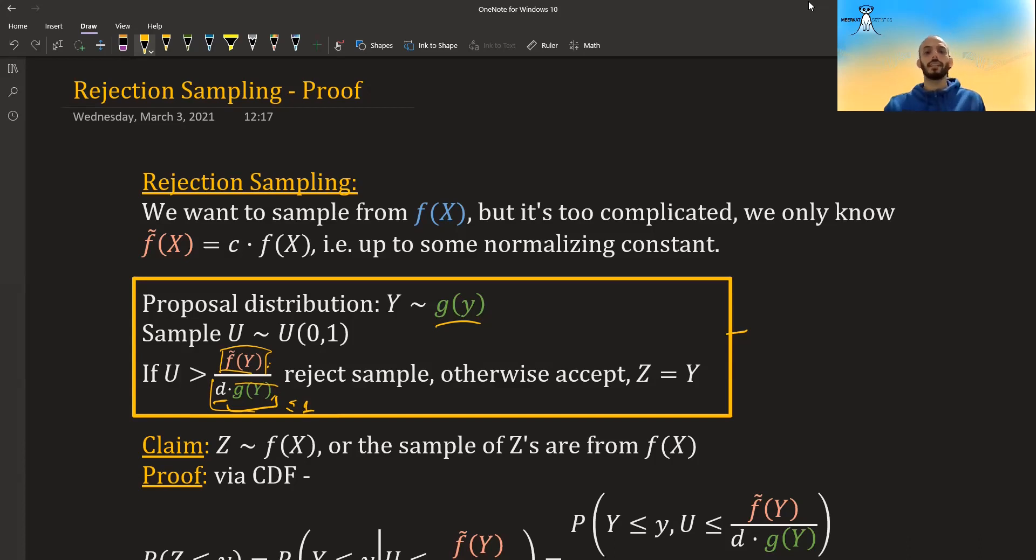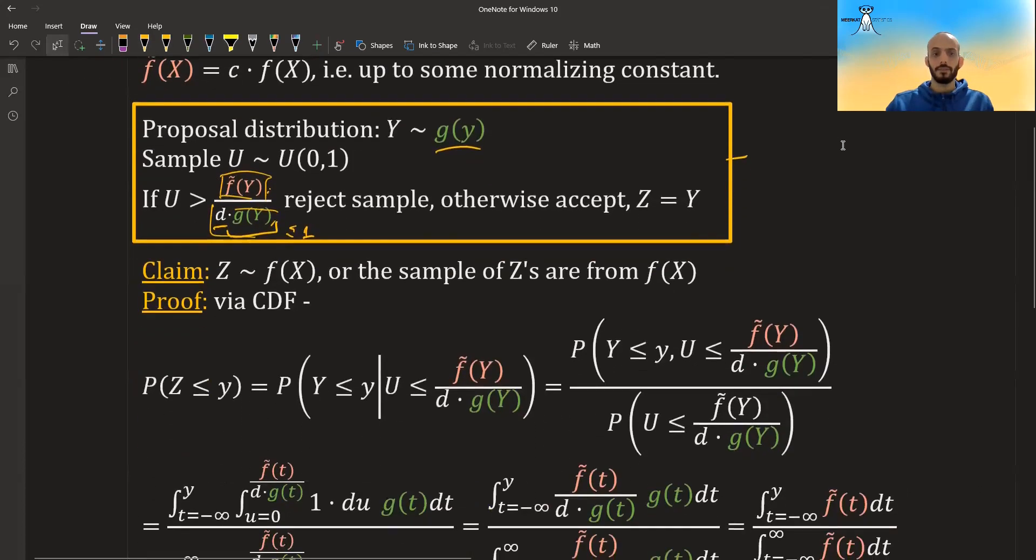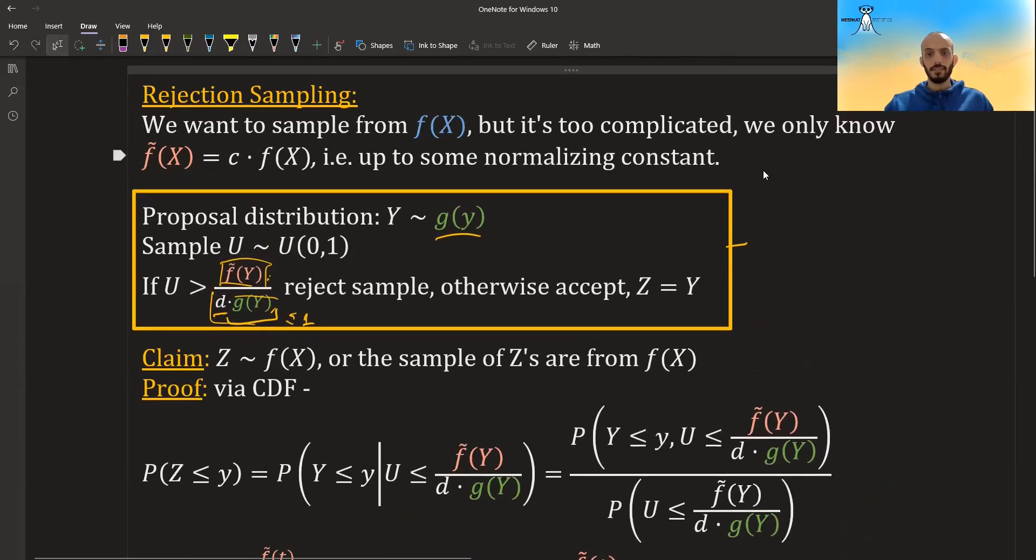So the claim that we want to make or we want to prove is that all the z's, all of the observations that we obtained from doing rejection sampling actually come from a distribution f(x). The real f(x). So either we want to say that z distributes f(x) or that the samples that we obtain come from f(x). It's the same.